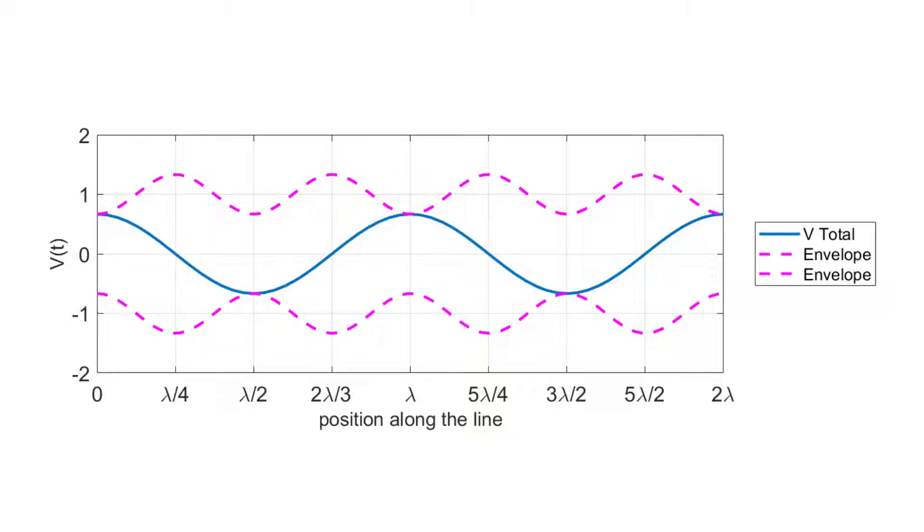Students are often confused by the envelope of the total voltage. They ask themselves if the voltage is changing all the time, how can it be a fixed DC value at any point along the line? So what do the voltage values associated with the envelope actually represent?